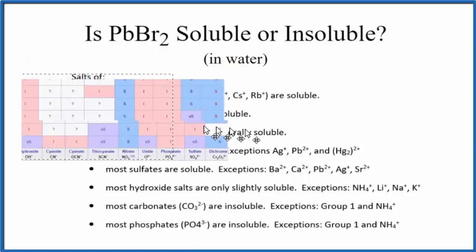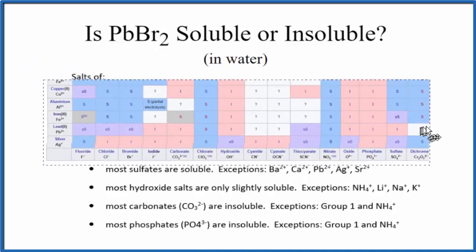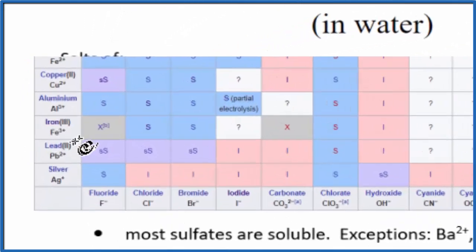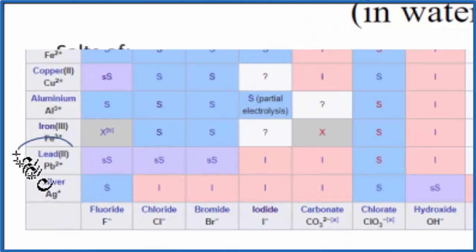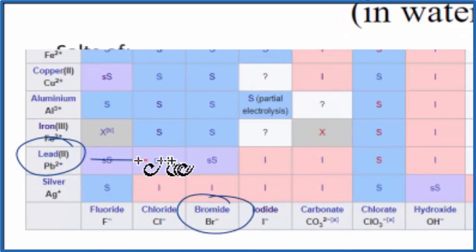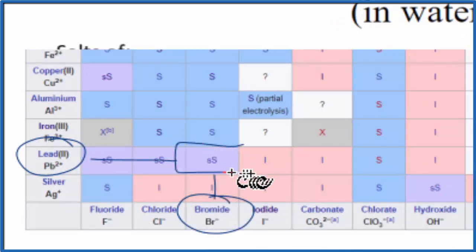Let's take a look at a portion of a solubility chart to see what that says. On our chart, here's lead-2, Pb2+, and here's the bromide ion, Br⁻. We go over and up, and there's SS — slightly soluble.